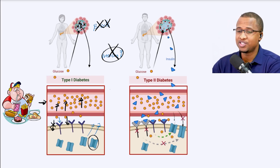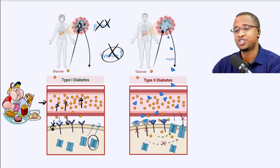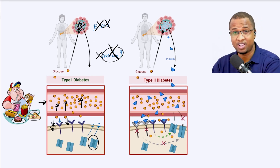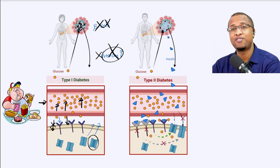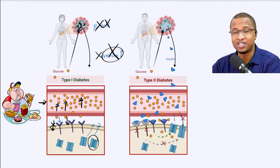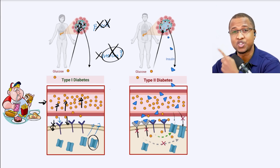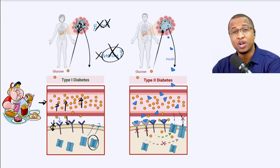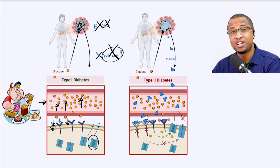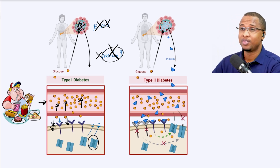The point is, your cells are destroyed and they can't make insulin. So you can remember that for type 1 diabetes, you have one problem: your beta cells are destroyed and they can't make insulin. When we're talking about type 2 diabetes, that's a different story.